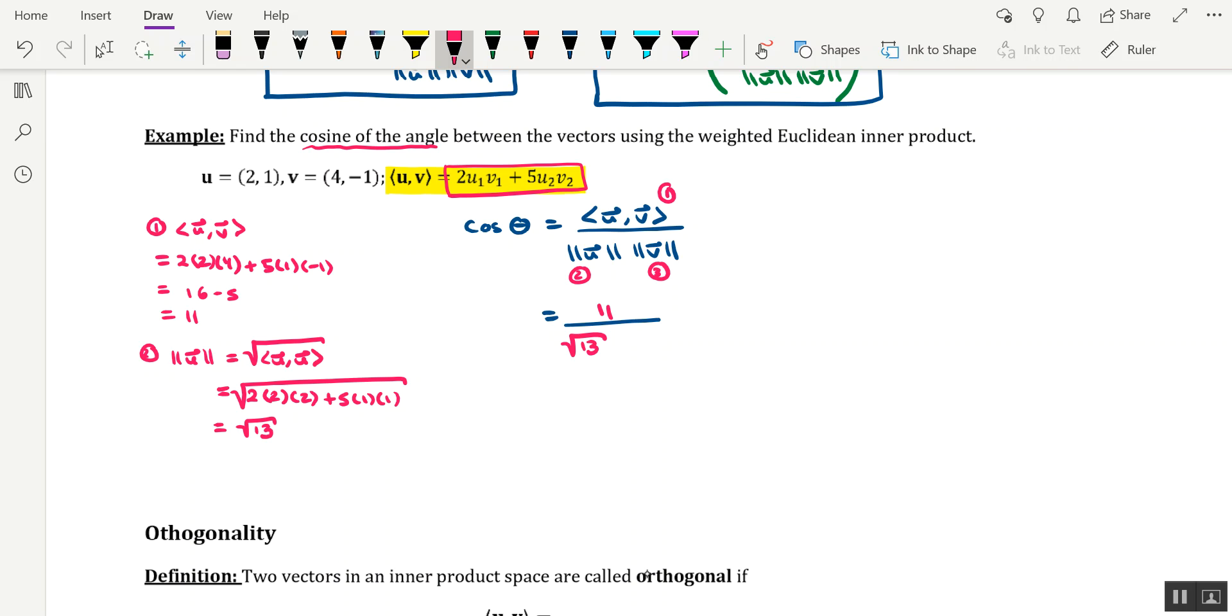And now the second factor of the denominator, so we'll find the norm of the vector v. Okay, that's the inner product of v with itself, square rooted. So that's going to be 2 times v1, which is 4, times v1 plus 5 times v2 times v2. All that goes under the square root. So we're looking at 32 plus 5. In other words, the square root of 37. Oh, and I just barely made it in this space. So the square root of 37.